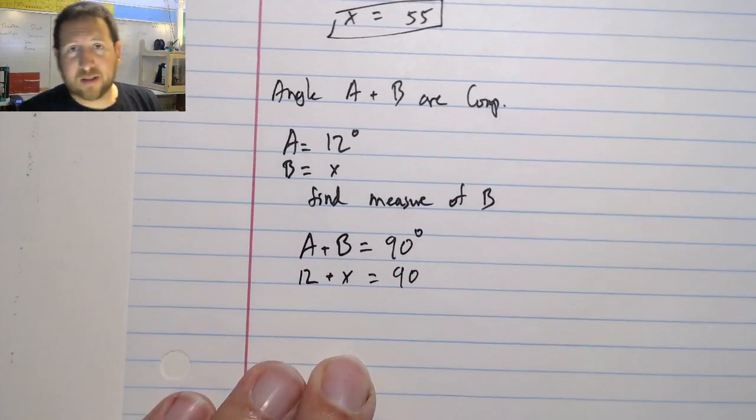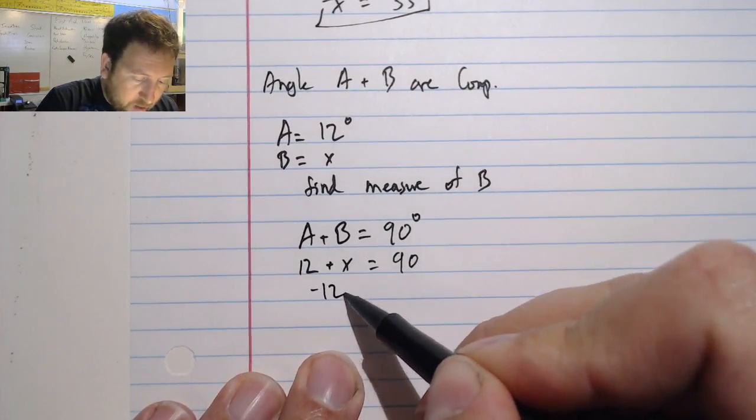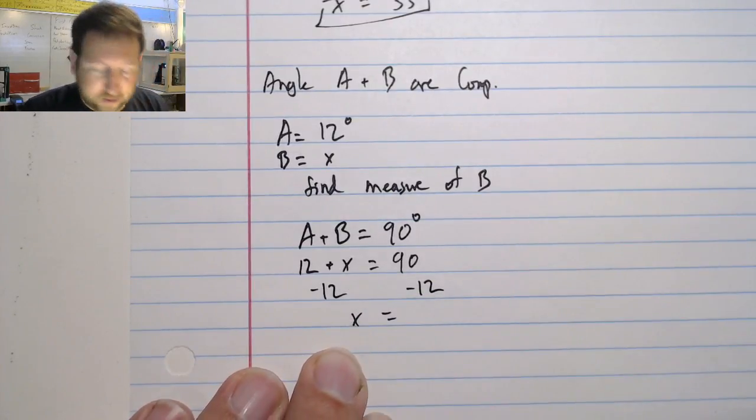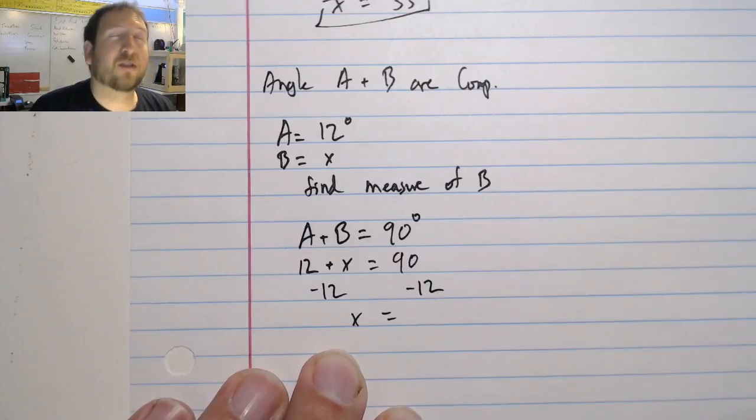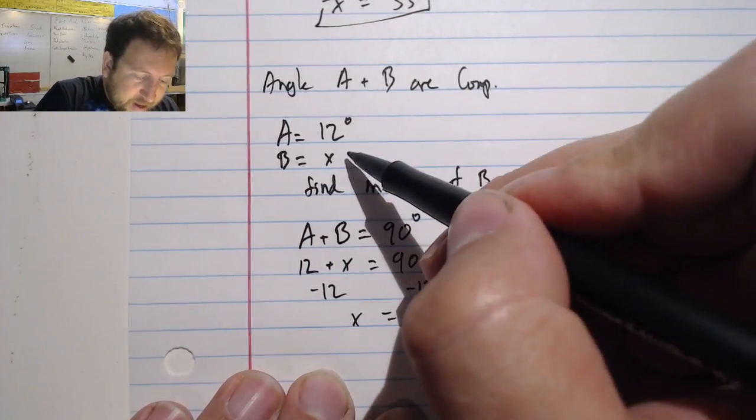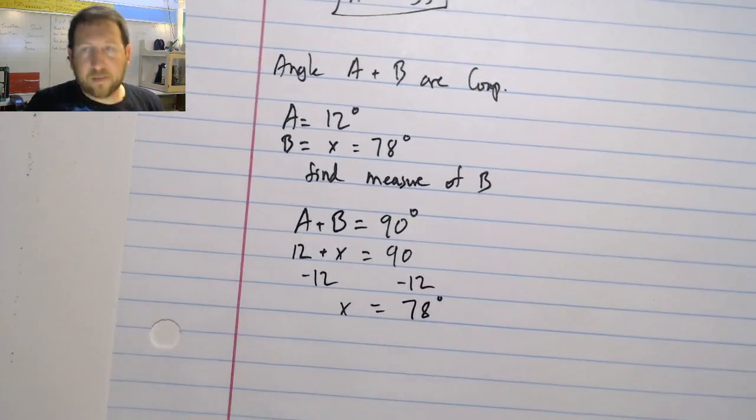And now I have 12 plus x. Well, that's very easy for me to solve. I'm going to subtract 12 from both sides. I have x. 12 minus 12, of course, is 0. x and 90 minus 12 is 78. So I can see that x is 78 degrees, simply by using my theorem.